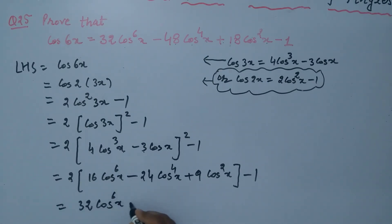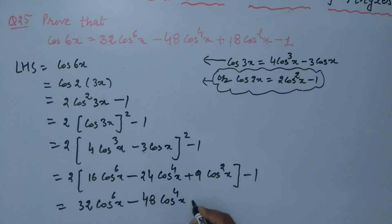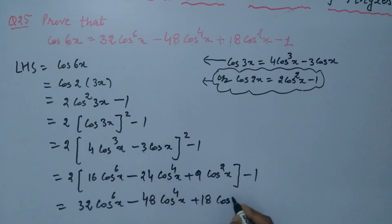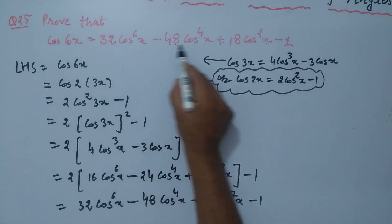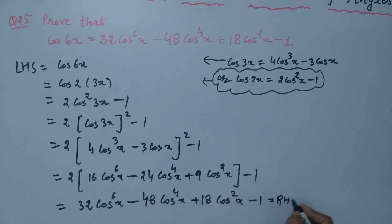The final result is 2(16 cos⁶x - 24 cos⁴x + 9 cos²x) - 1 = 32 cos⁶x - 48 cos⁴x + 18 cos²x - 1. This is exactly the right hand side, which was to be proved. Hence proved. Thank you very much.